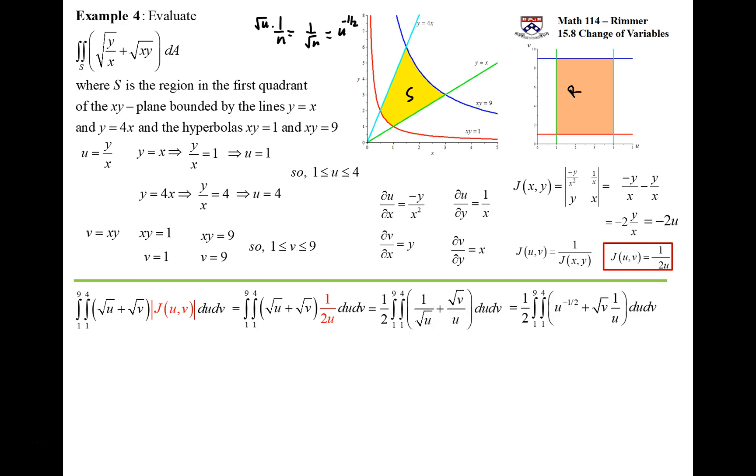We can isolate this rad v, kind of pull it out front—it's constant, we're integrating with respect to u. So we're going to get the power rule in reverse: this will be u to the half times 2, and then u to the negative one half. This would be a natural log. We have to put a 4 in and a 1 in. So the square root of 4 is 2, so that's going to be 2 times 2, that's 4, plus rad V times log 4. And then we put the 1 in and we get 2 plus rad V times log 1.